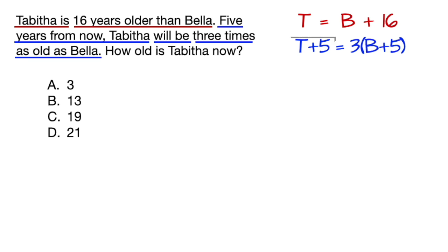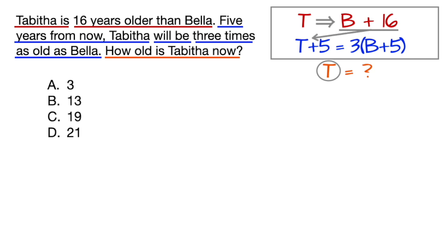The key here is if Tabitha is T plus 5 in the future, Bella also has to be plus 5. And then the question asks how old is Tabitha now, which means solve for T. So now we have two equations and two variables and have to solve for T. If T equals B plus 16, we could plug the B plus 16 in for T in the other equation, giving us this. And then we just simply solve for B and B equals 3.